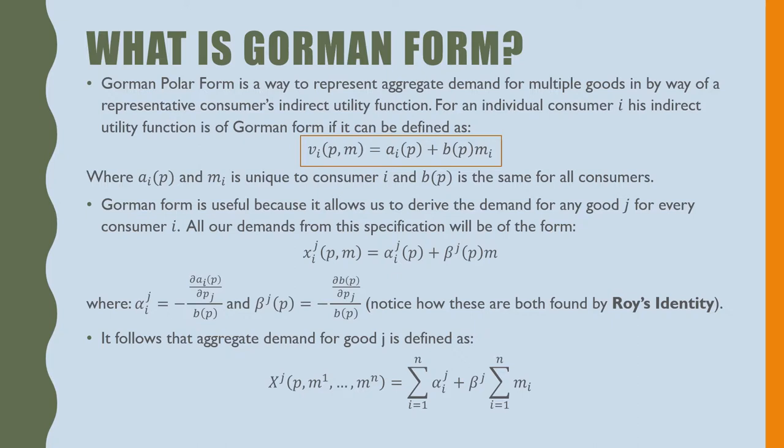It follows that the aggregate demand for good J is defined as the summation of all of our alphas in our system for every consumer for good J plus beta—notice how there's only one beta because it's the same for every consumer—times the summation of all the income from every consumer in our system.